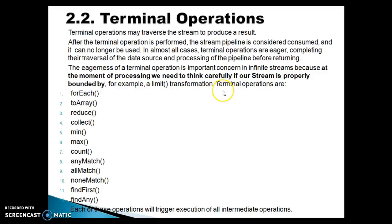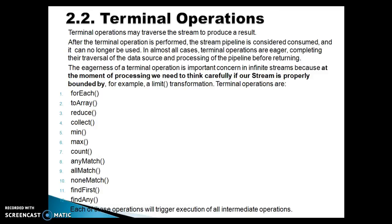The eagerness of the terminal operation is an important concern in infinite streams, because at the moment of processing we need to think carefully about whether our stream is properly bounded — for example, by a limit transformation. Terminal operations include: forEach, toArray, reduce, collect, min, max, count, anyMatch, allMatch, noneMatch, findFirst, and findAny. Most of these APIs have already been covered in the previous series. Each of these operations will trigger execution of all intermediate operations.